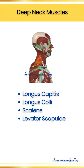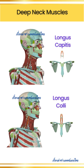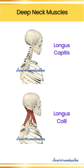Three: deep neck muscles. These muscles lie close to the vertebrae and play a critical role in stabilizing and fine-tuning the movement of the neck and spine. Longus capitis and longus colli: these muscles run along the front of the cervical vertebrae and are involved in neck flexion and stabilizing the spine.